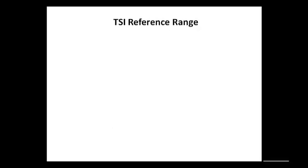Let's take a look at the reference range for thyroid-stimulating immunoglobulins. Not only does the reference range differ from lab to lab, but there are two different units used. In the past, labs used to use a percentage, and while some labs still do this, others are using a different unit of measurement. With a lab such as LabCorp, you'll see that they use international units per liter, and their reference range is 0 to 0.55 international units per liter.